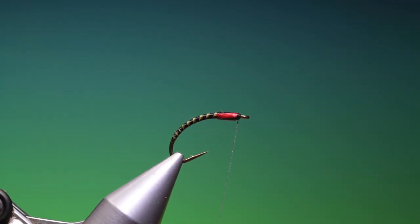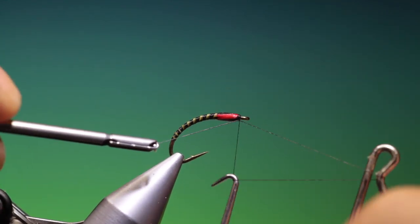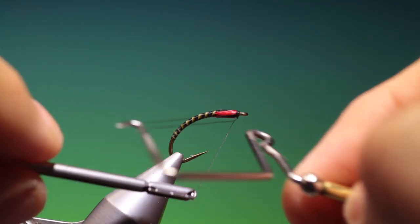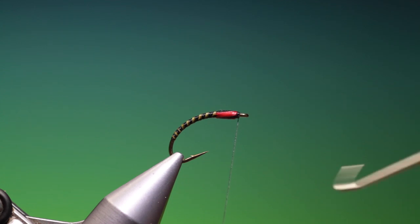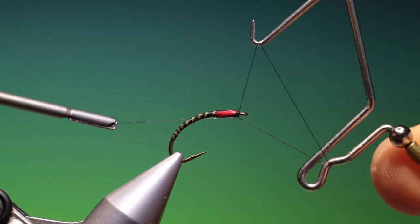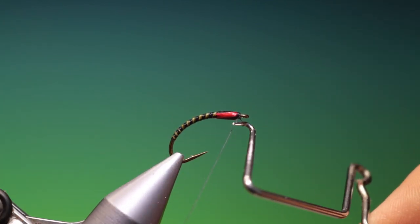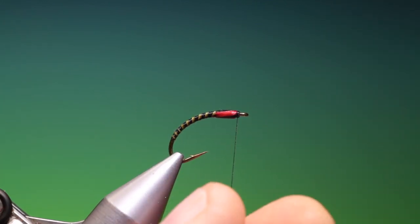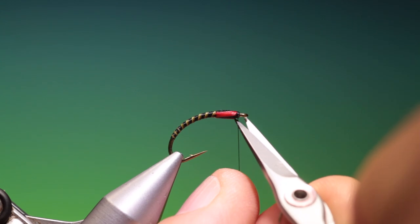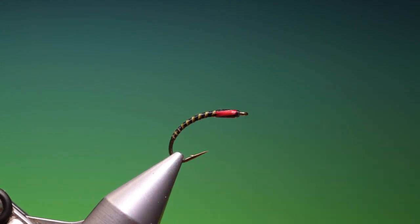Then we make a whip finish. The red quills imitate the swollen wing buds that are filled with haemoglobin. Do that.